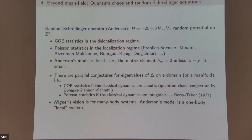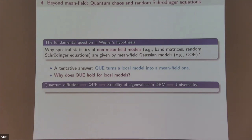GOE and GUE are completely delocalized mean-field models. There is a parallel conjecture I won't state because I have no results on it. These three lectures focus on these types of problems. A key question is how random Schrödinger equations can be modeled by mean-field matrices — this is the central question, along with the theory of graphs.